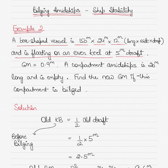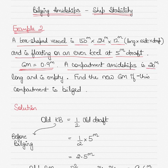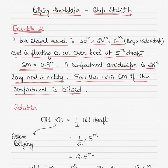This vessel is floating on an even keel at 5 meters draft, and this is before bilging takes place, so the initial draft is 5 meters. The GM of the vessel is 0.9 meters. A compartment located midships of this vessel is 20 meters long and is currently empty. We have to find the new GM if this compartment gets bilged and starts to take in water.